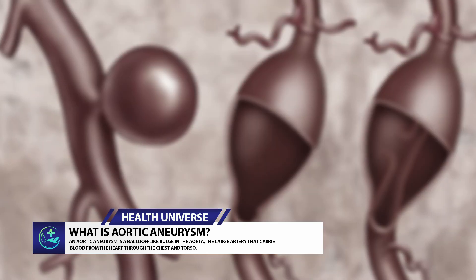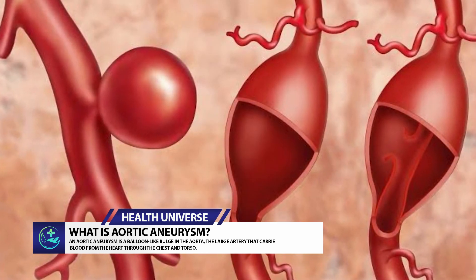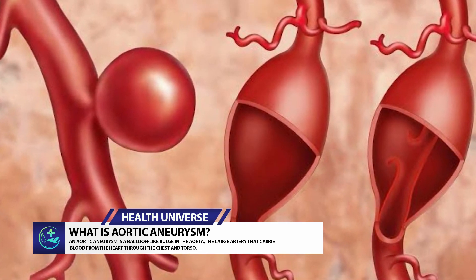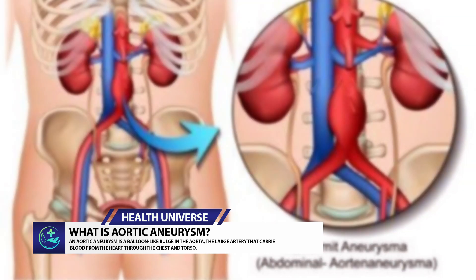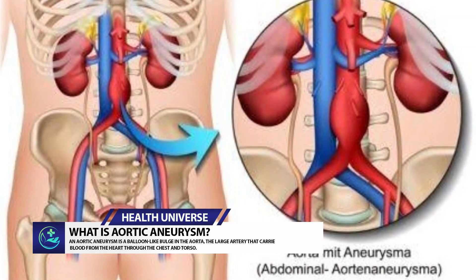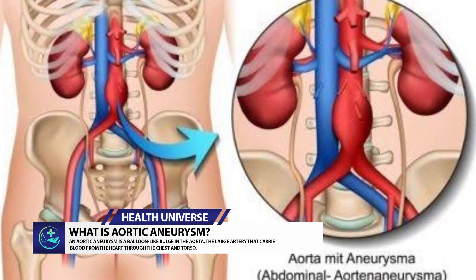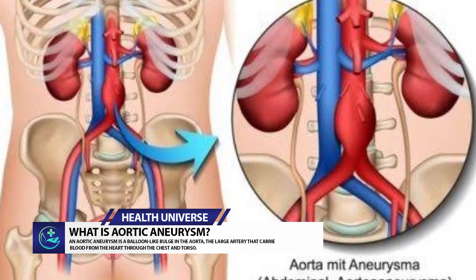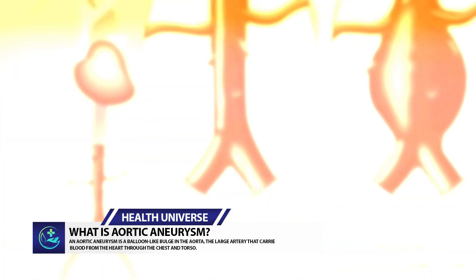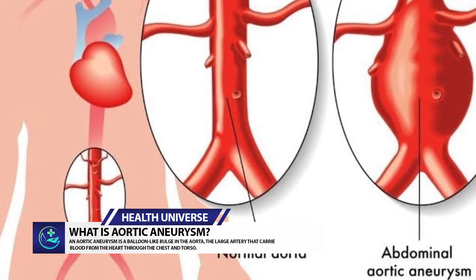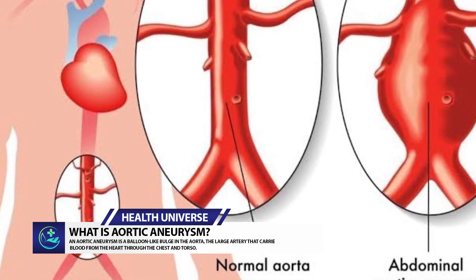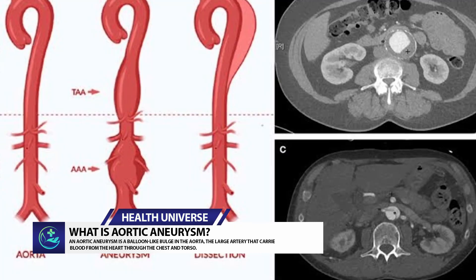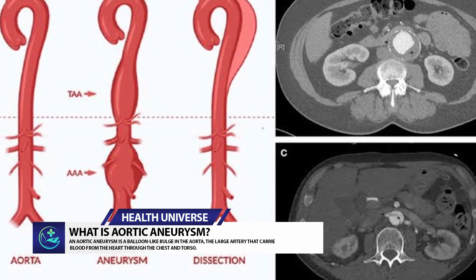Some inherited connective tissue disorders, such as Marfan syndrome and Ehlers-Danlos syndrome, can also increase your risk for aortic aneurysm. Your family may also have a history of aortic aneurysms, which can increase your risk.